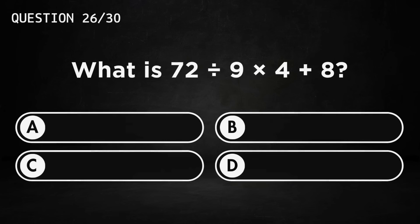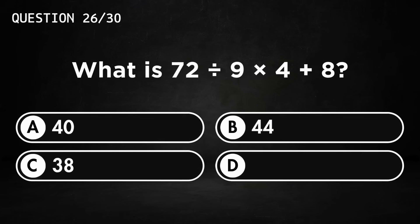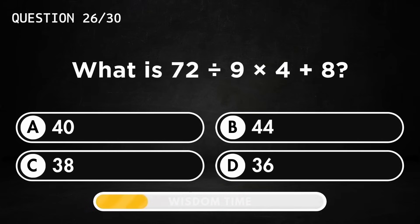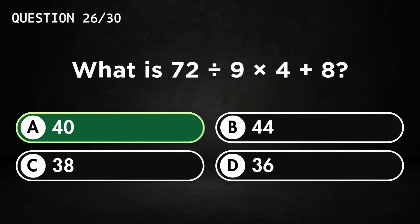What is 72 divided by 9 times 4 plus 8? Answer A, 40.